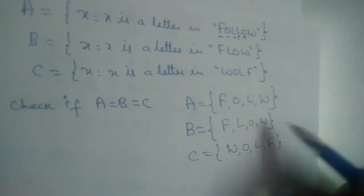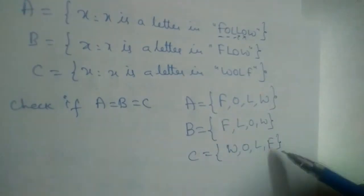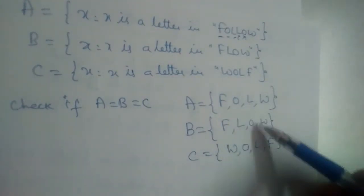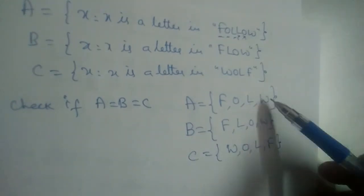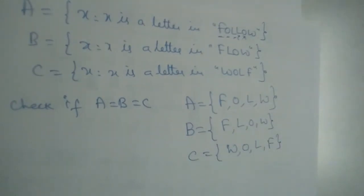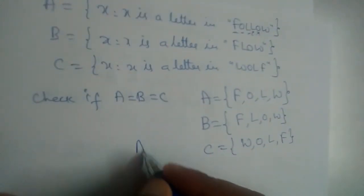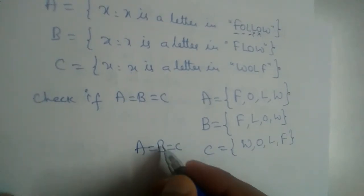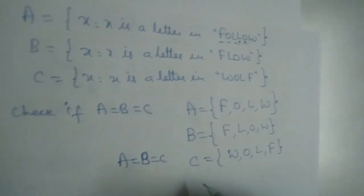F is in all three sets, O is in all three sets, L is in all three, W is in all three, right? So can we say A is equal to B is equal to C? Are all these three sets equal? Yes, they are equal.